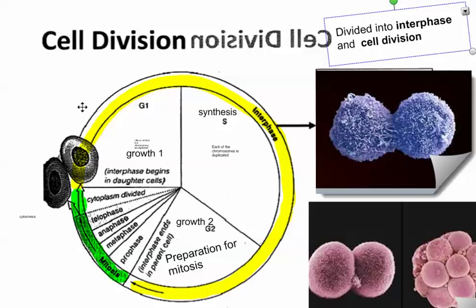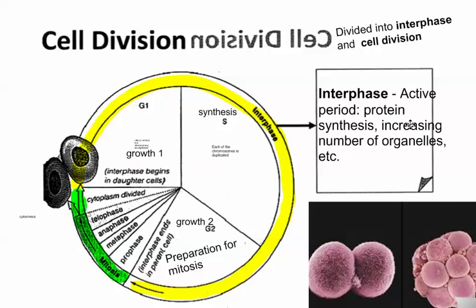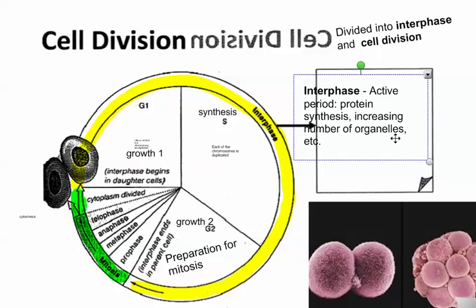Interphase is highlighted here in yellow in this diagram. Interphase is pretty much the majority of the time a cell will be in — so if I take a snapshot of any cell from human, animal, or plant tissue, most likely I'll catch it in the middle of interphase. This is not to be confused as a boring time where nothing is going on; this is where all the major metabolic reactions are actually happening inside cells.